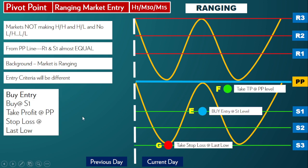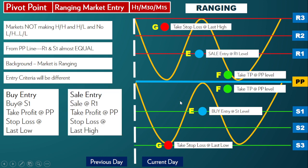When we have this scenario, the entry criteria will be different. For a buy entry, we will take a buy entry at the S1 level. Take profit will be at the PP level, and your stop loss will be at the last low. For a sell entry, we will take a sell entry at the R1 level, take profit at the PP level, and stop loss will be up at the last high.